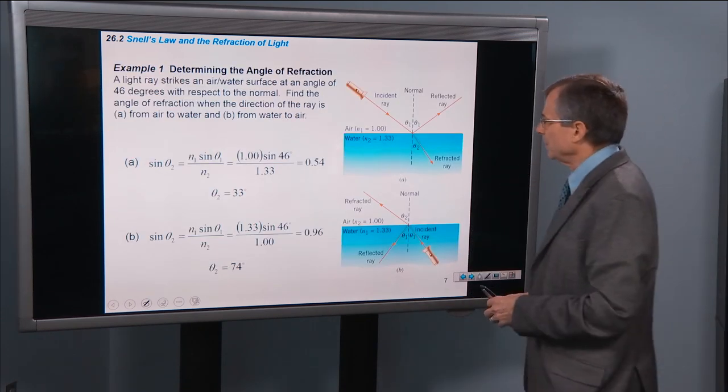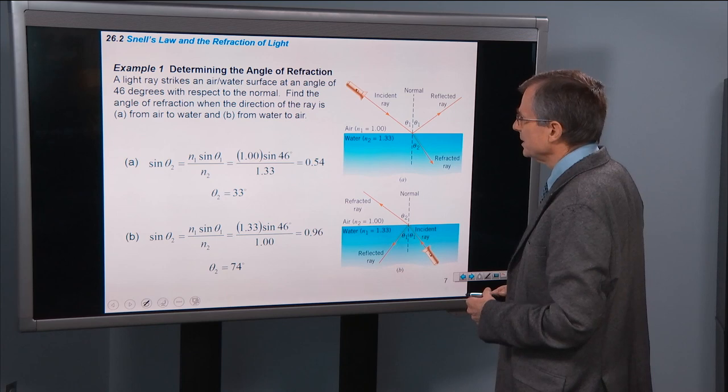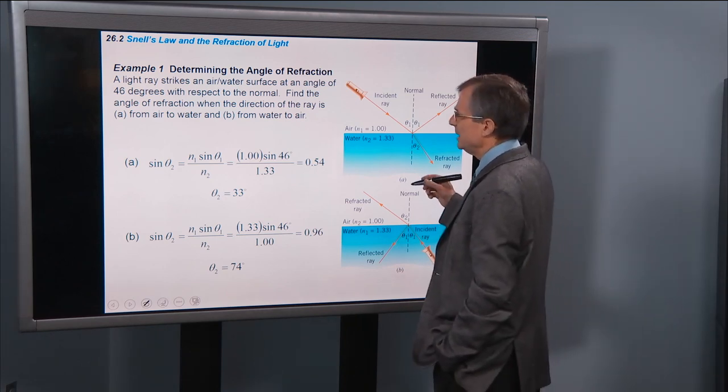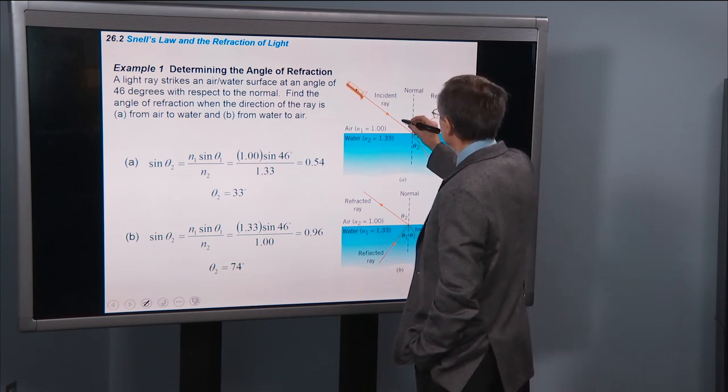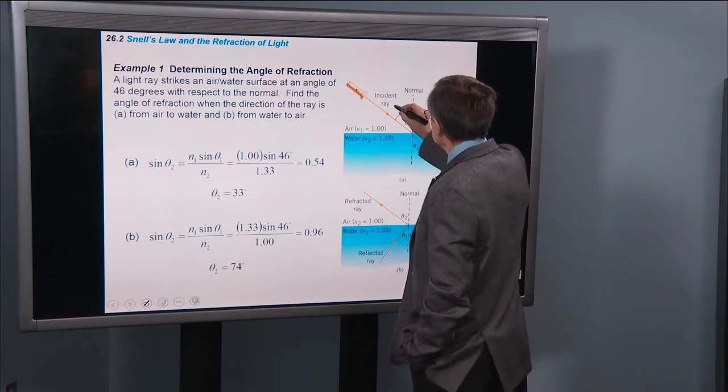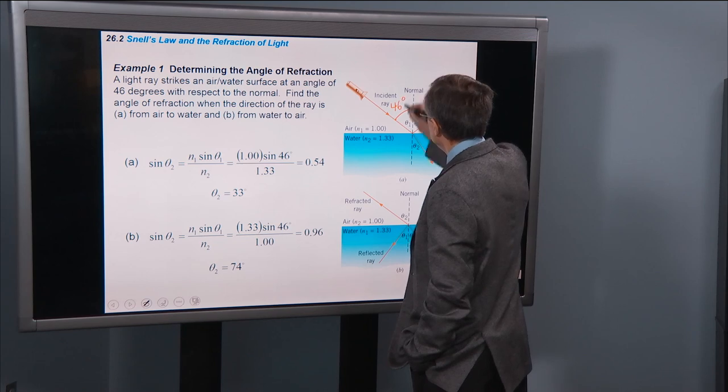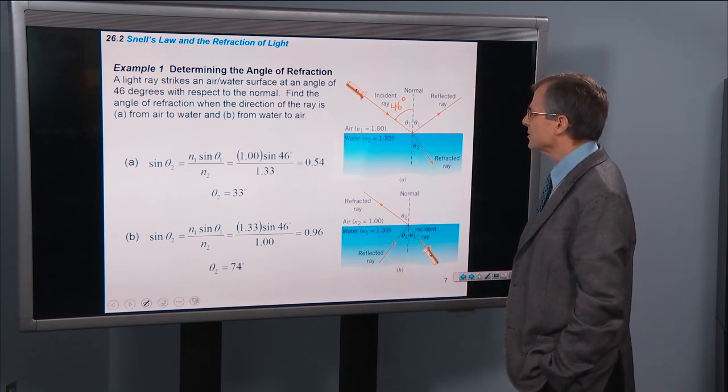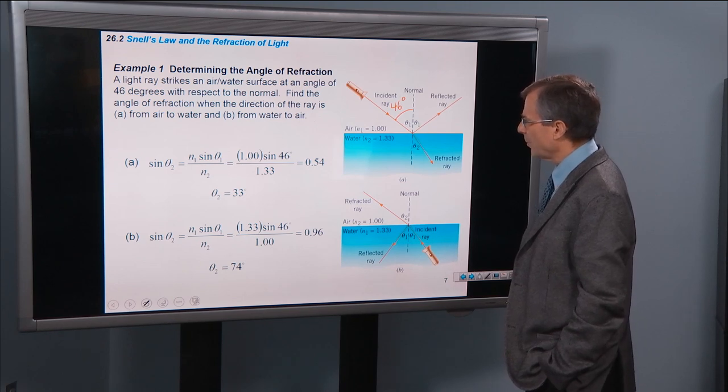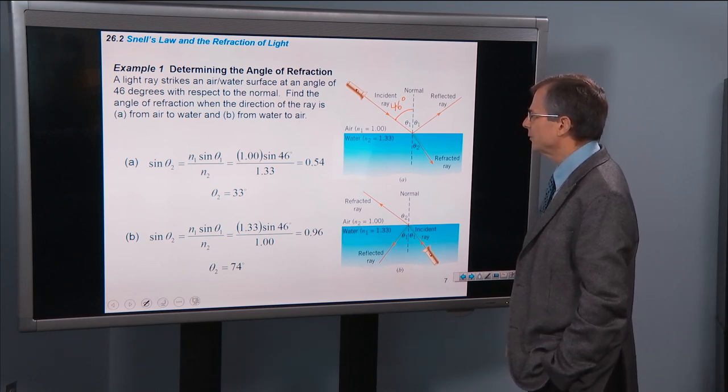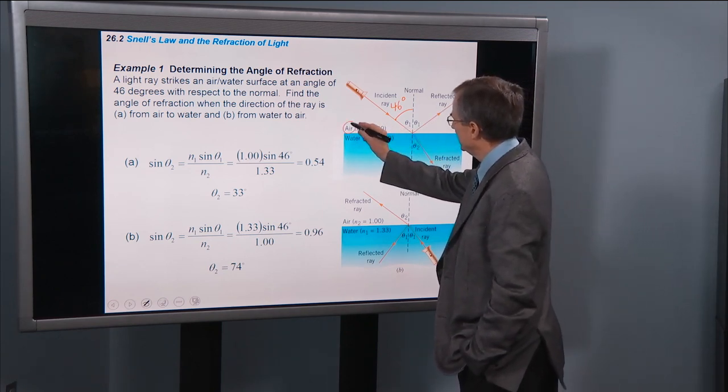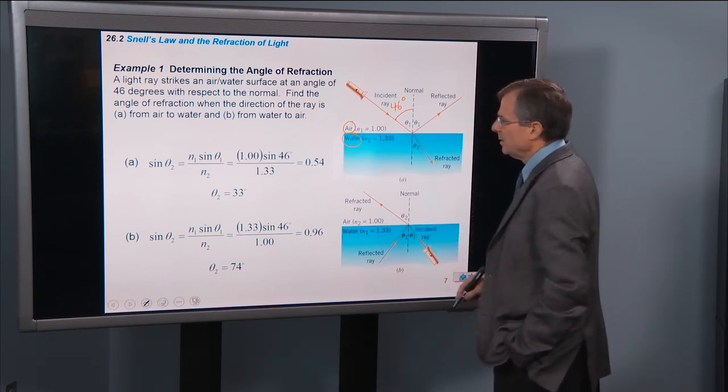So an example: determine the angle of refraction. A light ray strikes an air water surface at an angle of 46 degrees with respect to the normal. So this is 46 degrees. Find the angle of refraction when the direction of the ray is from air to water and from water to air. So first from air into water.